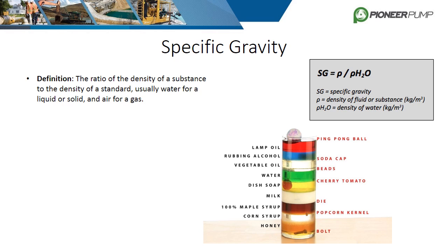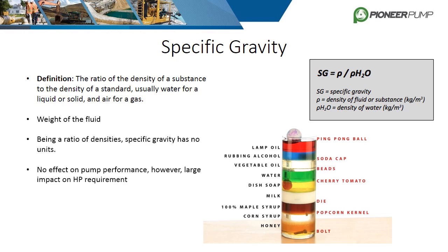The best way to describe specific gravity is the weight of the fluid. It is the ratio of the density of a substance compared to a standard substance, usually water. If the viscosity of the liquid is like that of water, specific gravity has no effect on pump performance, but it does drastically affect the power required to pump the liquid. It can also influence the onset of cavitation in a pump. Heavier liquids increase the pump's suction energy, so pumps with high suction energy levels — meaning high flow and lift — may experience cavitation damage.